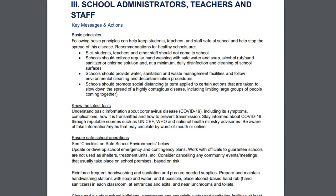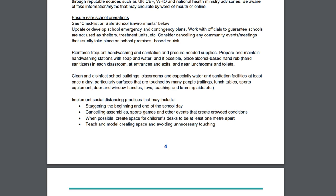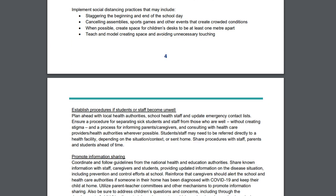Schools should limit large groups of people gathering together. Ensure safe school operations. Checklist for a safe school environment: update and develop a school emergency and continuity plan, work with official guidance on whether schools should be open or closed, and consider staggered school days, cancelling assemblies and events, and controlling crowd conditions.